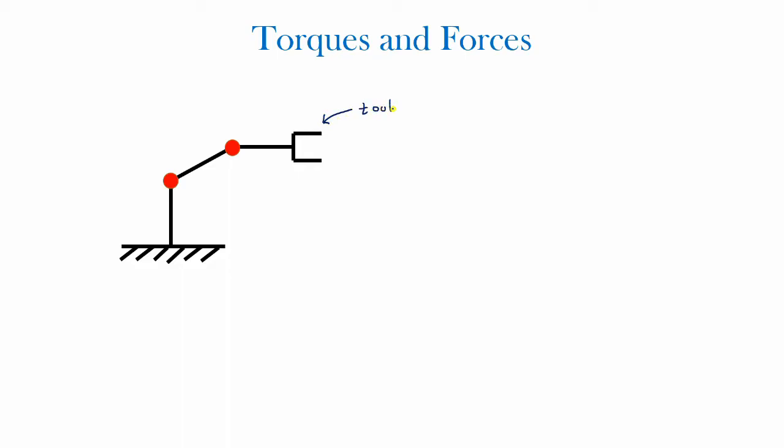All right guys, so the motivation behind this section is that the tool of the robot, which is this part over here, would usually be supporting some sort of object or it may be pushing against an object or lifting an object or anything like that. So let's go ahead and imagine an object being supported by this tool. Now this object is going to have its weight due to gravity, you can call that W.